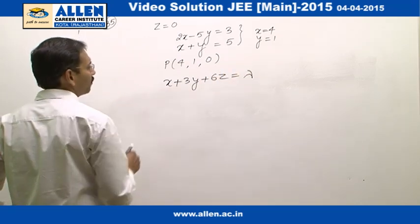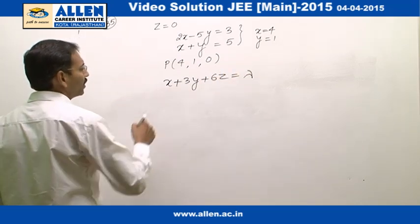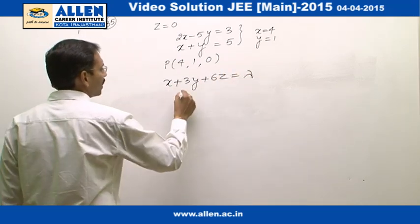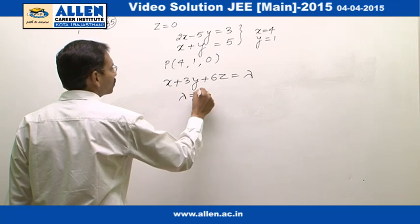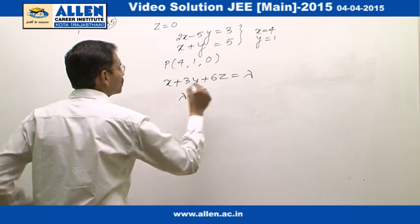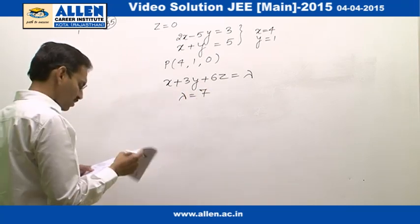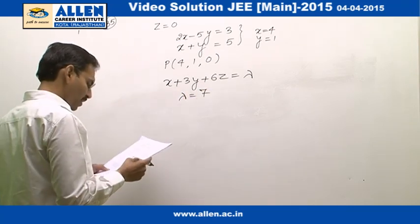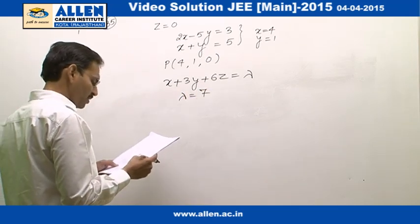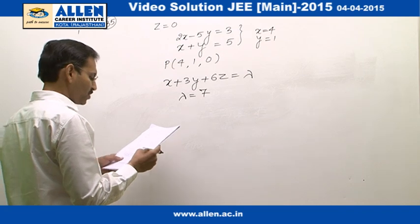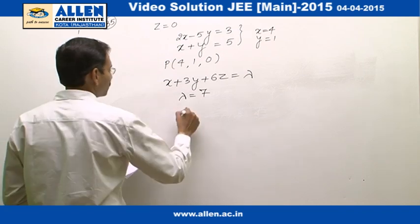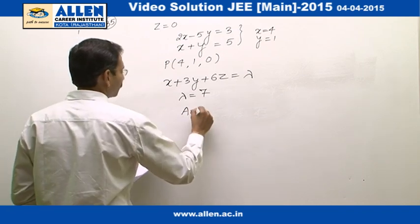To get the value of lambda, we put the point (4, 1, 0) into the equation, which gives us lambda equals 7. So our required plane is x plus 3y plus 6z equals 7, which is option 1, so the answer is 1.